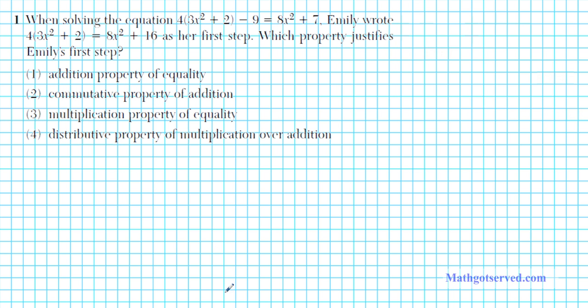Alright let's take a look at question number one. It says: when solving the equation 4 times the quantity 3x squared plus 2 minus 9 equals 8x squared plus 7, Emily wrote 4 times the quantity 3x squared plus 2 equals 8x squared plus 16 as her first step. Which property justifies Emily's first step? Is it addition property of equality, commutative property of addition, multiplication property of equality, or the distributive property of multiplication over addition?